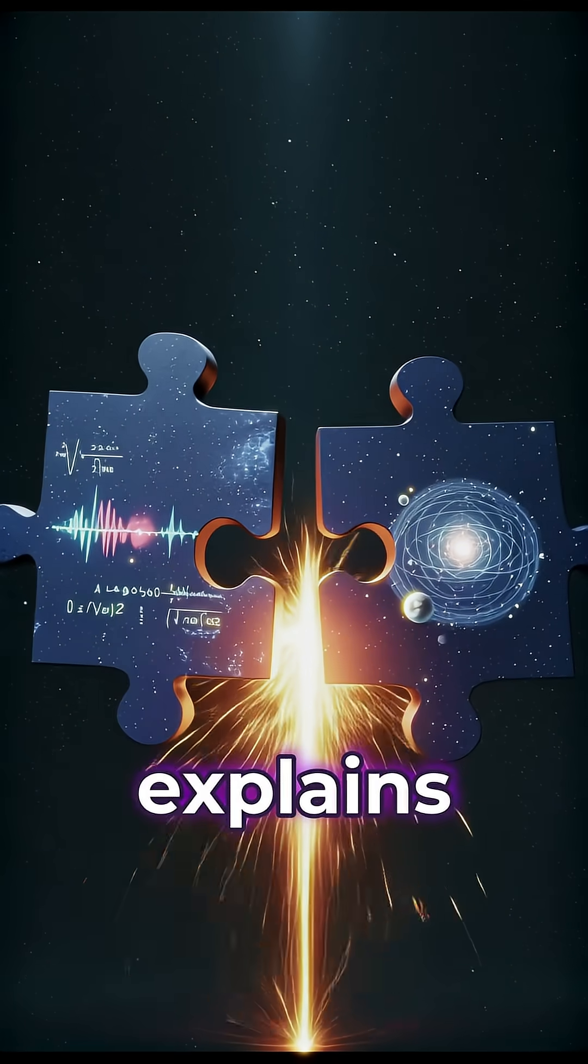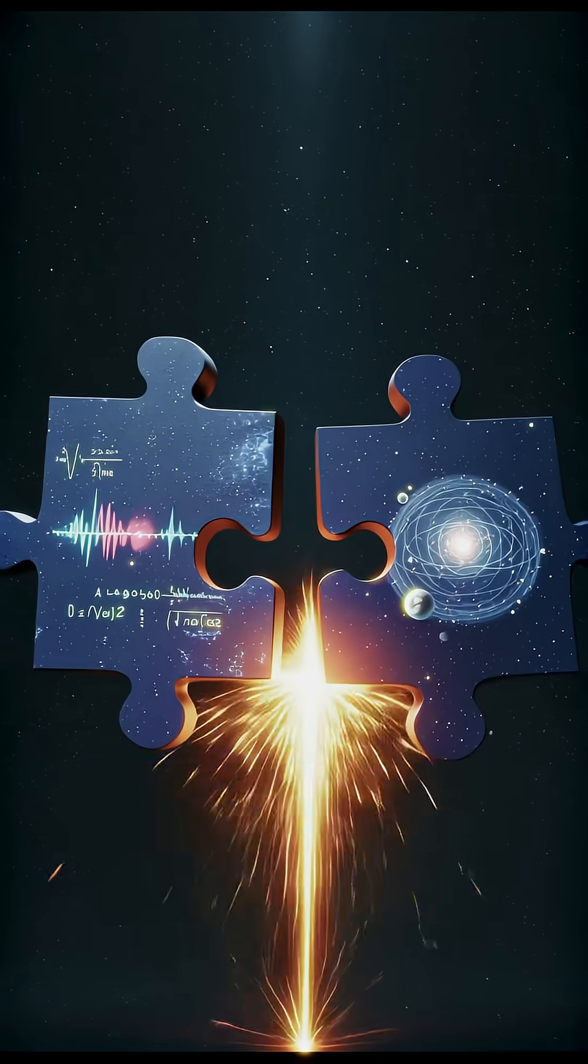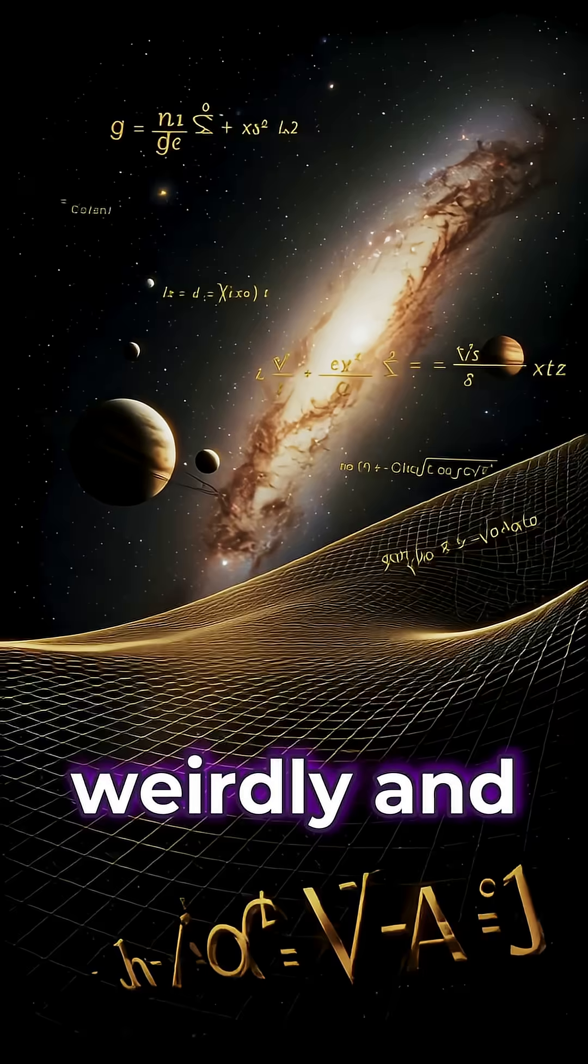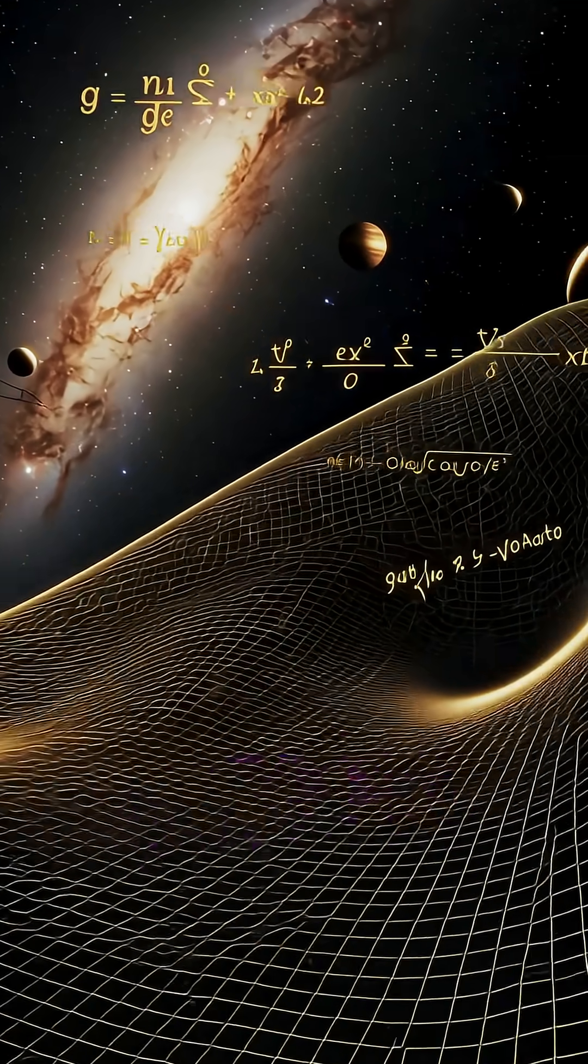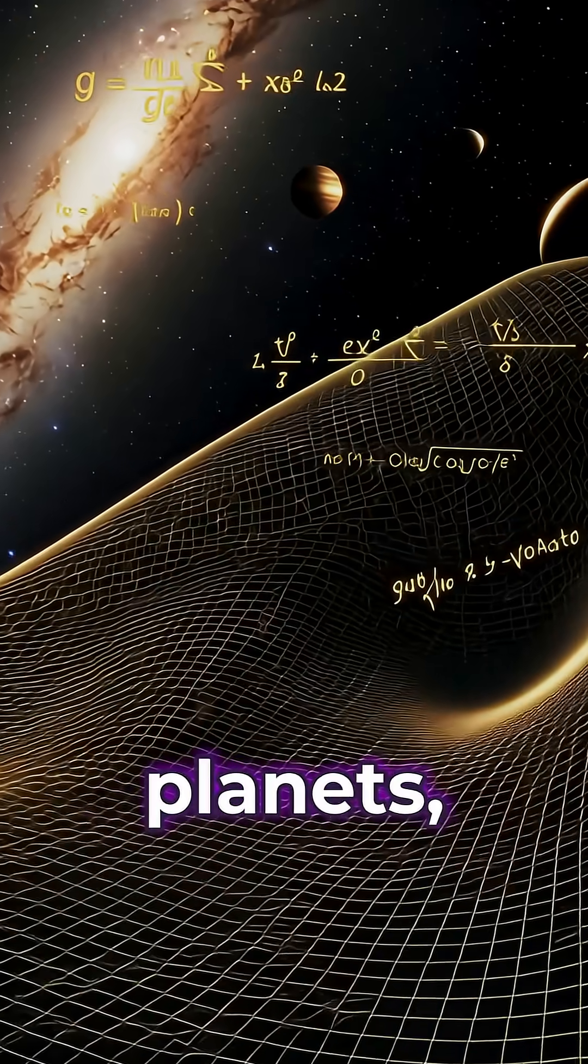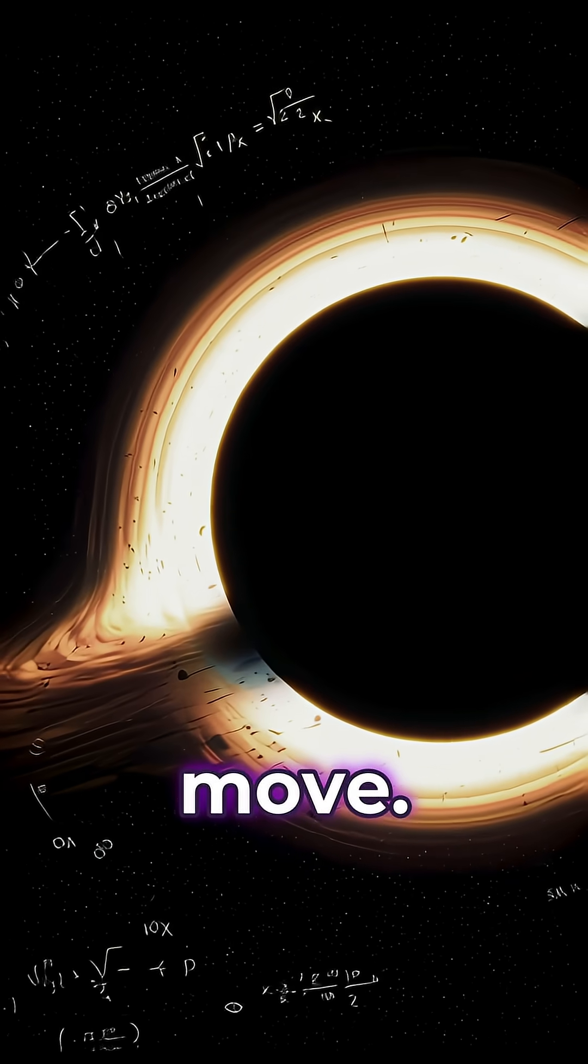Quantum physics explains the super-small, how particles behave weirdly and randomly. And Einstein's gravity explains the super-big, how planets, stars and galaxies move.